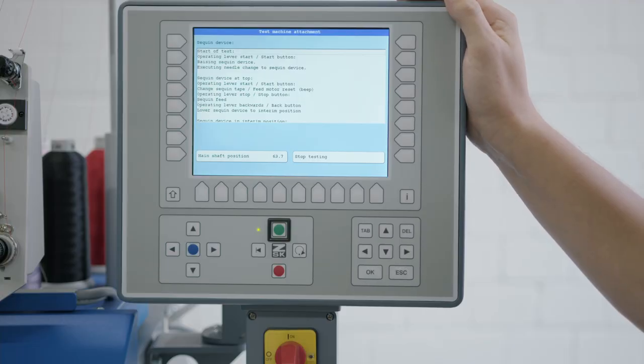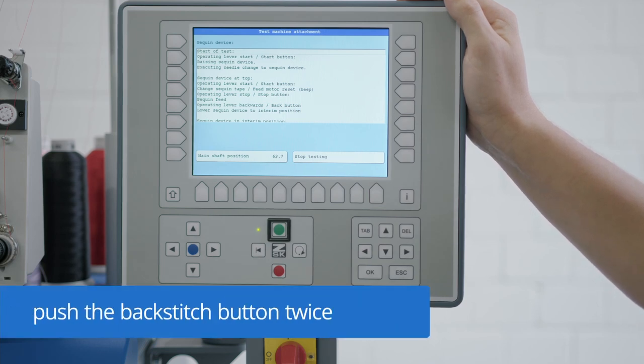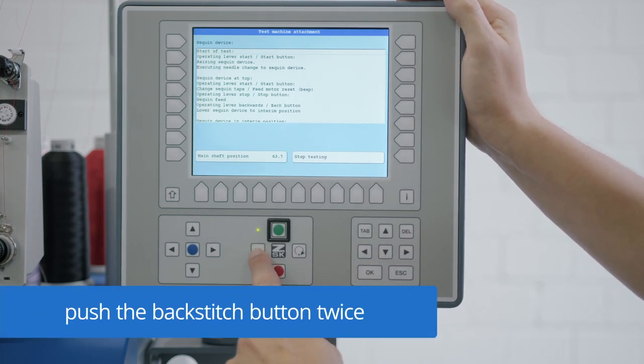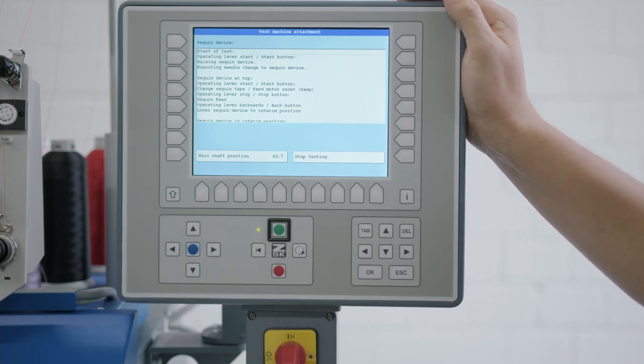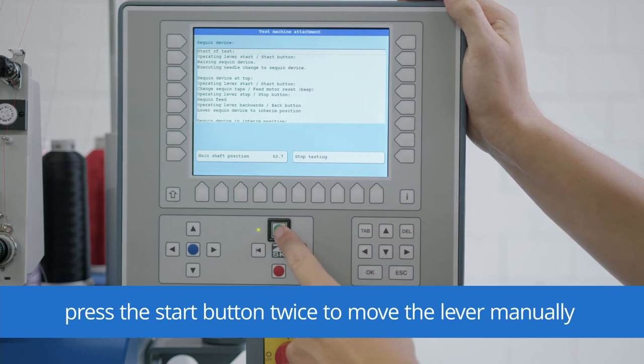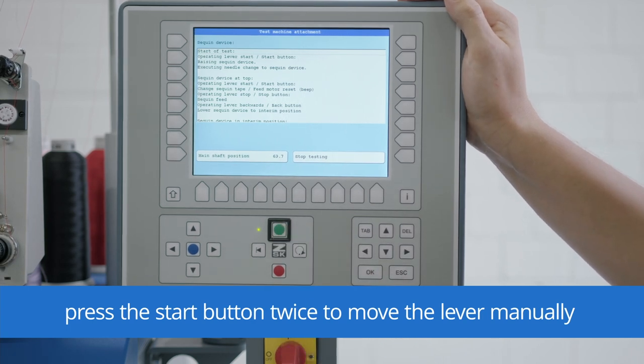In order to set up the bead feeder, we need to lift the device. Therefore, push the backstitch button twice. When the device is in the upper position, press the start button twice to be able to move the lever manually.